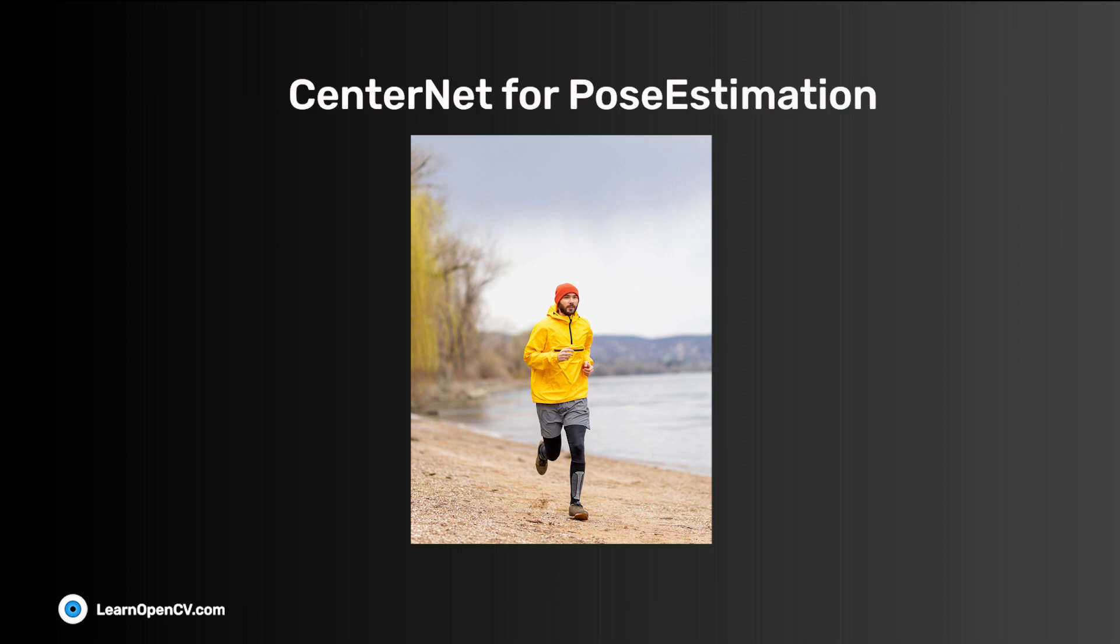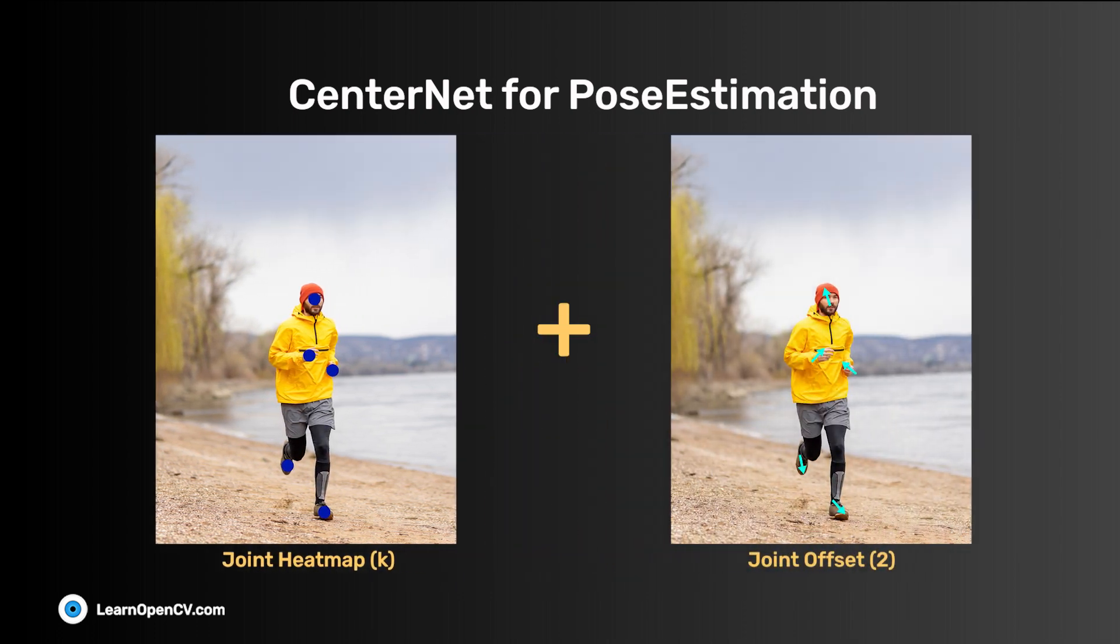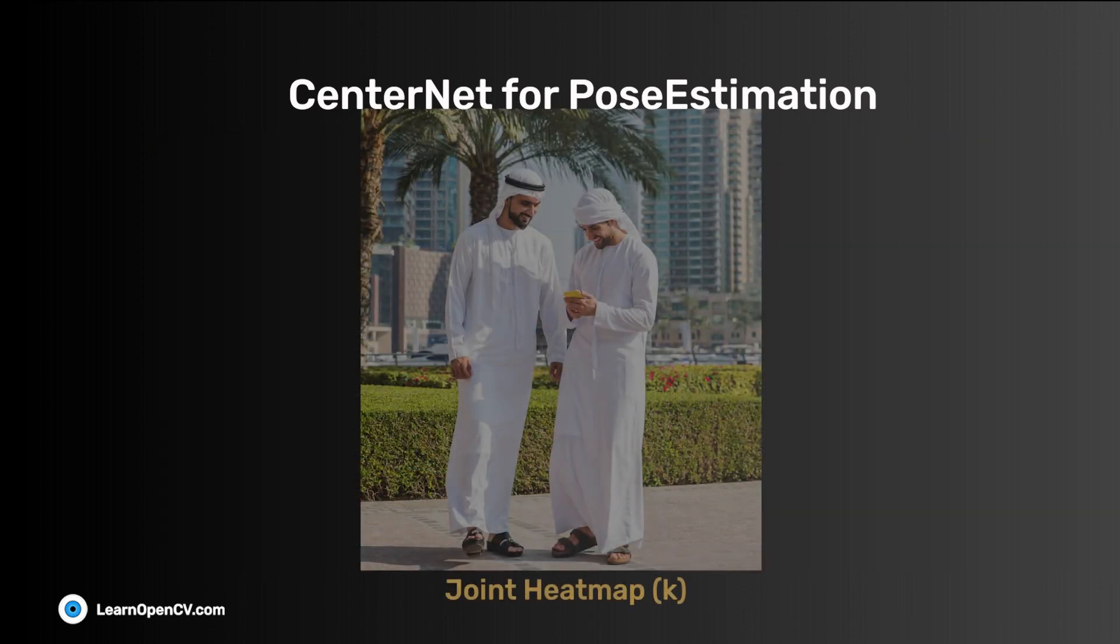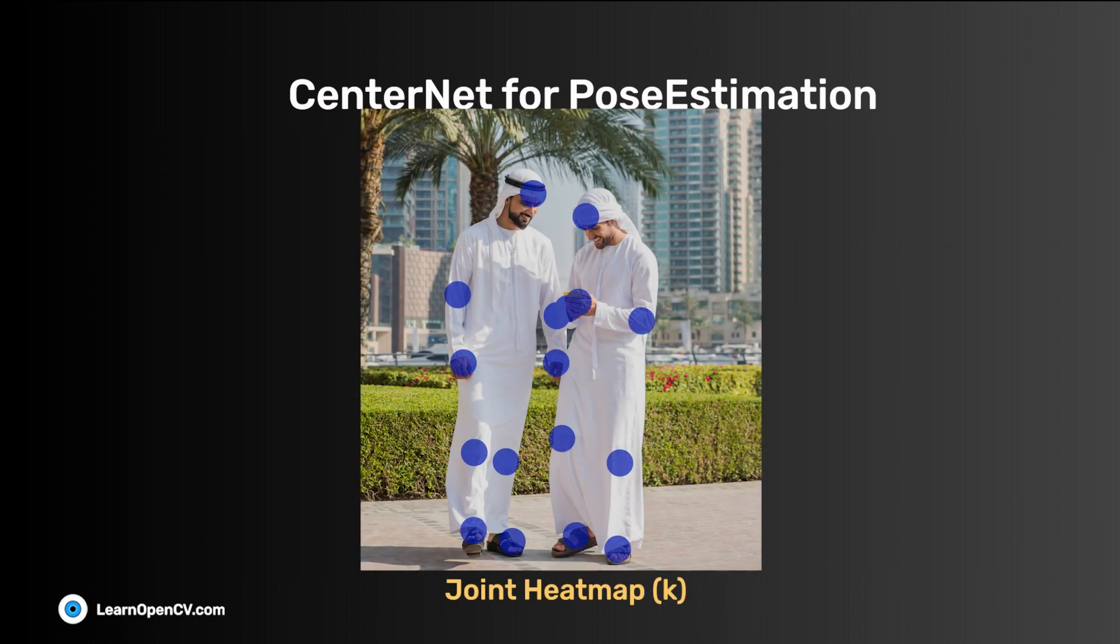Since CenterNet detects objects as points, it can also be extended to detect keypoints of objects. It treats these keypoints as classes and generates heatmaps for each class. Let's assume we want to predict k keypoints. If there's only one person in the image, combining heatmap and offset will have the precise location of all the keypoints of a single person. The problem arises when there is more than one person. Even if you have the precise location of all the keypoints, it is difficult to determine which keypoints belong to whom.